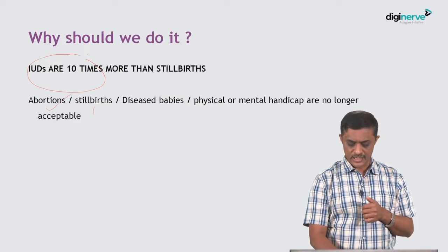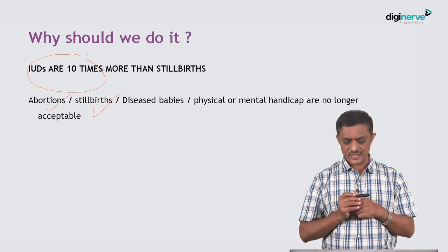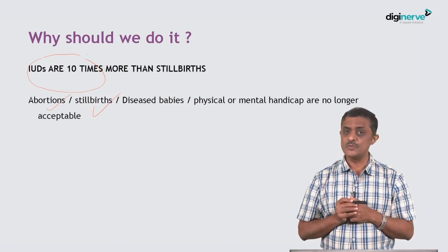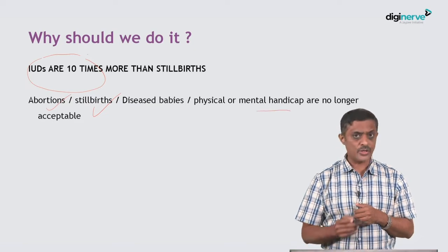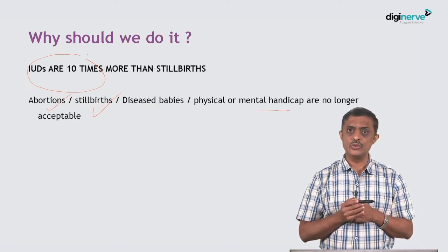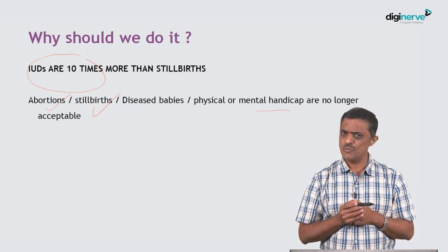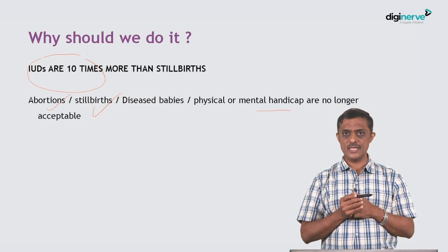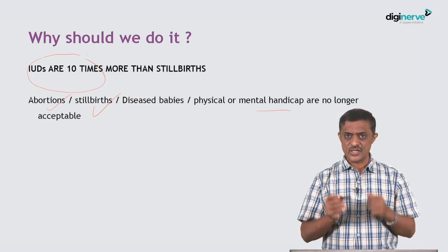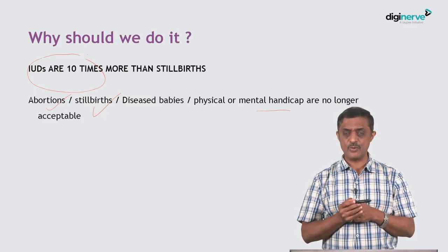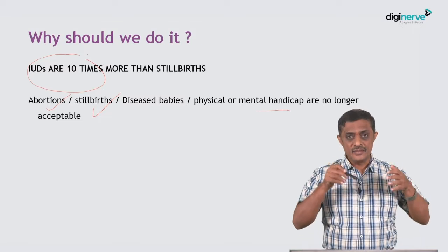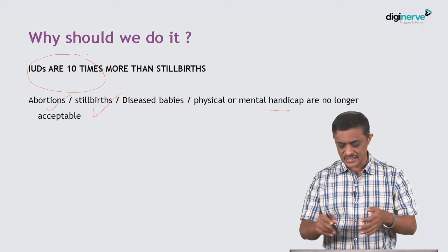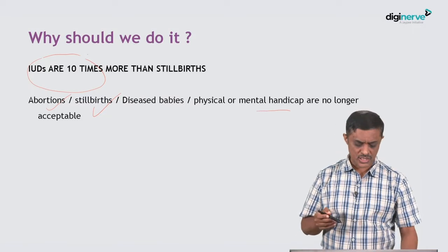Abortions, stillbirths, babies with diseases, babies with anomalies, babies with mental handicap are no longer acceptable to our population. Nobody wants to have this kind of outcome, and the obstetrician has the important responsibility to find out whether this pregnancy carries the risk of whatever we mentioned, and if so, what is to be done.